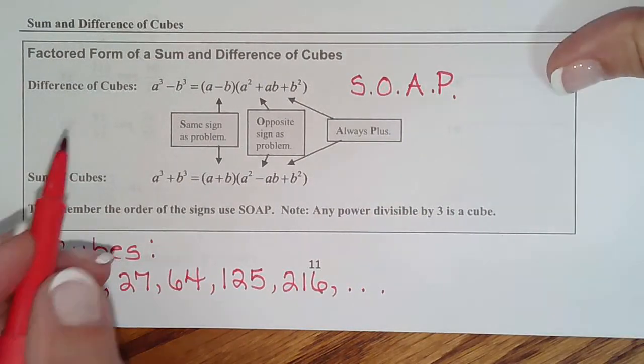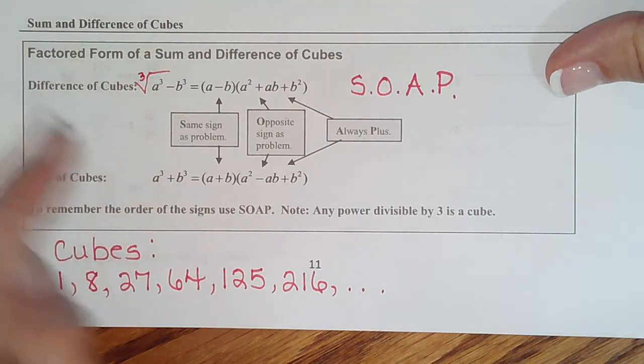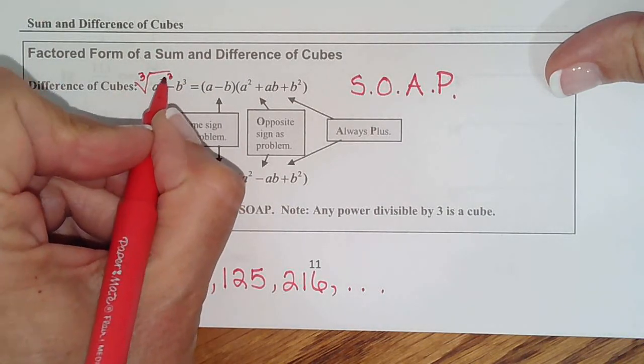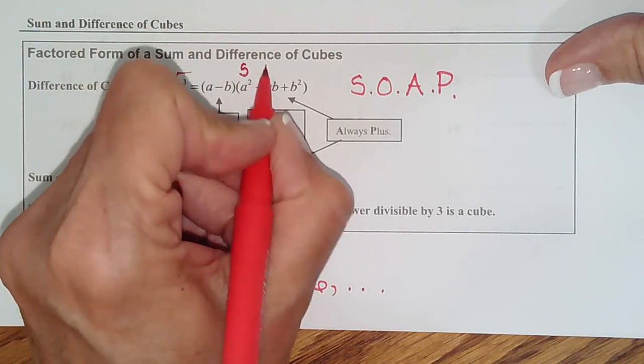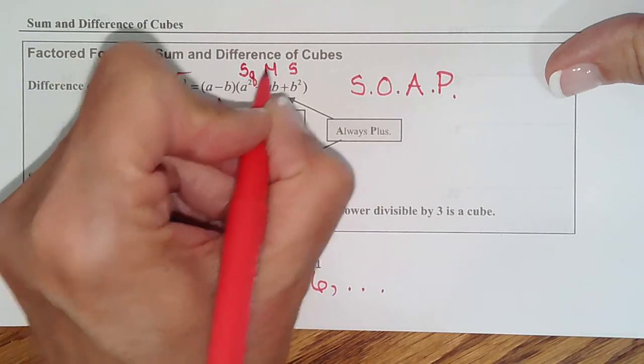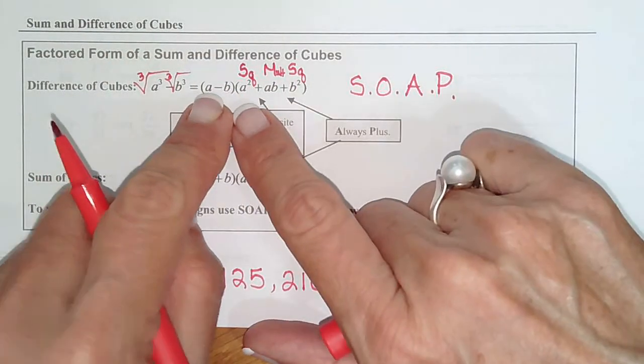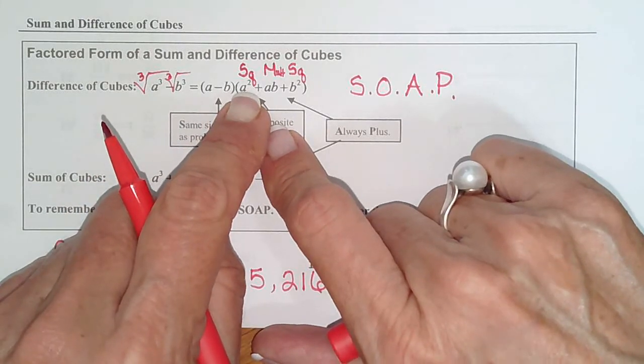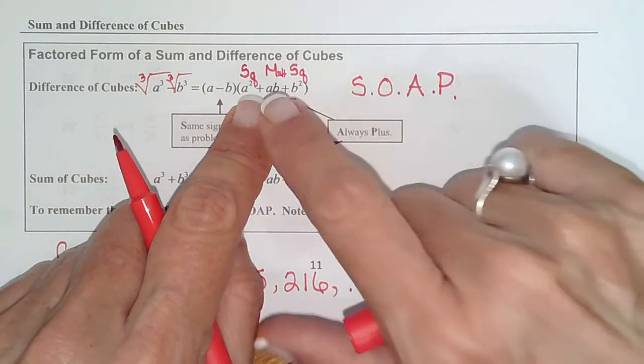And then we do cube roots on this one, which isn't surprising since we did square roots above. The cube root of a cubed is a. The cube root of b cubed is b. And then I made up another acronym for this parenthesis. SMS stands for square multiply square. So we take this number that we got from doing the cube root. We square it. That gives us a squared. Then we multiply the two. And remember, don't change the signs. The signs are set by SOAP.